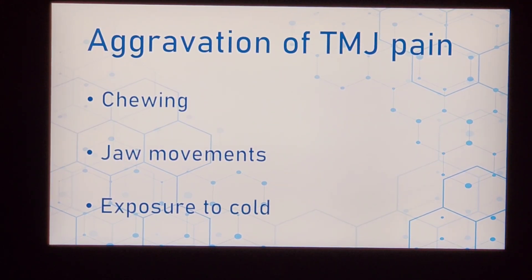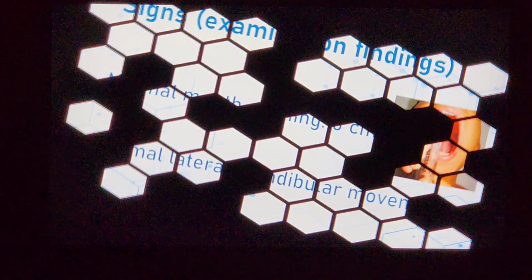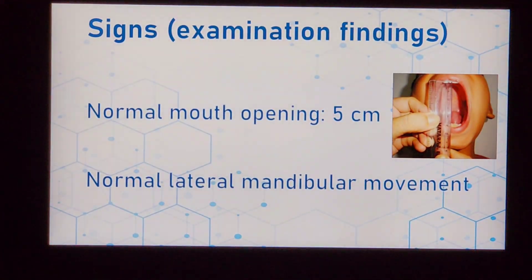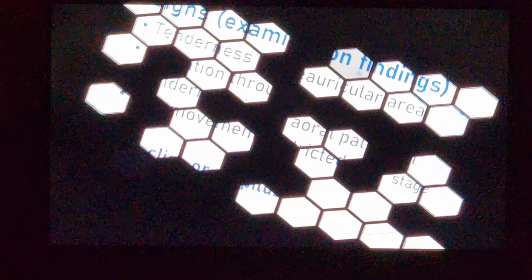The aggravating factors for TMJ pain are chewing and jaw movements. Some patients complain of pain at night, which can be because of exposure to cold. On examination, in the early stage their mouth opening will be normal, but if they present late — weeks or months — their mouth opening will be restricted, known as trismus. The normal mouth opening is five centimeters, and normally three fingers can be easily inserted into the open mouth. Normal lateral mandibular movement may also be hampered if chronicity increases.